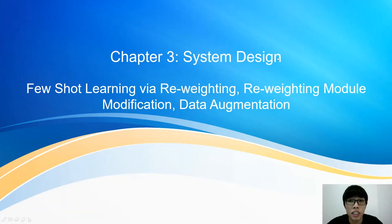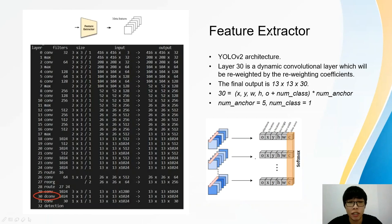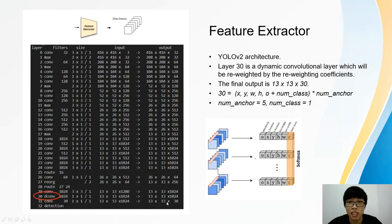Next, I will proceed to system design. Three techniques will be covered in this chapter: few-shot learning via reweighting, the reweighting module modifications, and data augmentations. The feature extractor module in this framework is the YOLO-V2 network. The key layer of this architecture is a dynamic composition layer which will be reweighted by the reweighting coefficients. The final output of this network is 13 × 13 × 30.